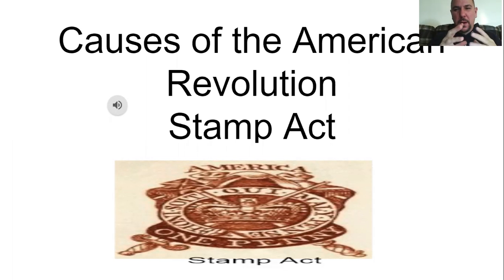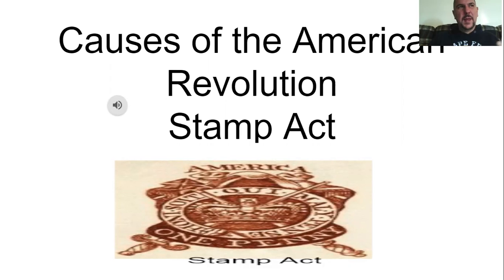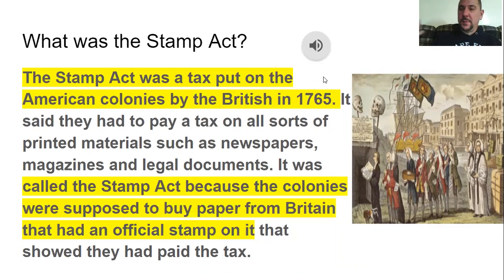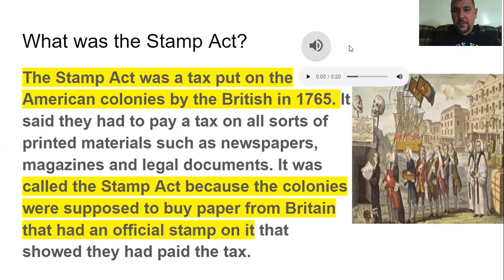The Stamp Act was the first tax after the French and Indian War that Britain placed on the colonists. The colonists eventually got it repealed because they protested. It was a tax on paper and printed materials — they had to place a stamp on them to show they had paid. The Stamp Act was put on the American colonies by the British in 1765, covering printed materials such as newspapers, magazines, and legal documents. The colonies were supposed to buy paper from Britain that had an official stamp showing the tax had been paid.